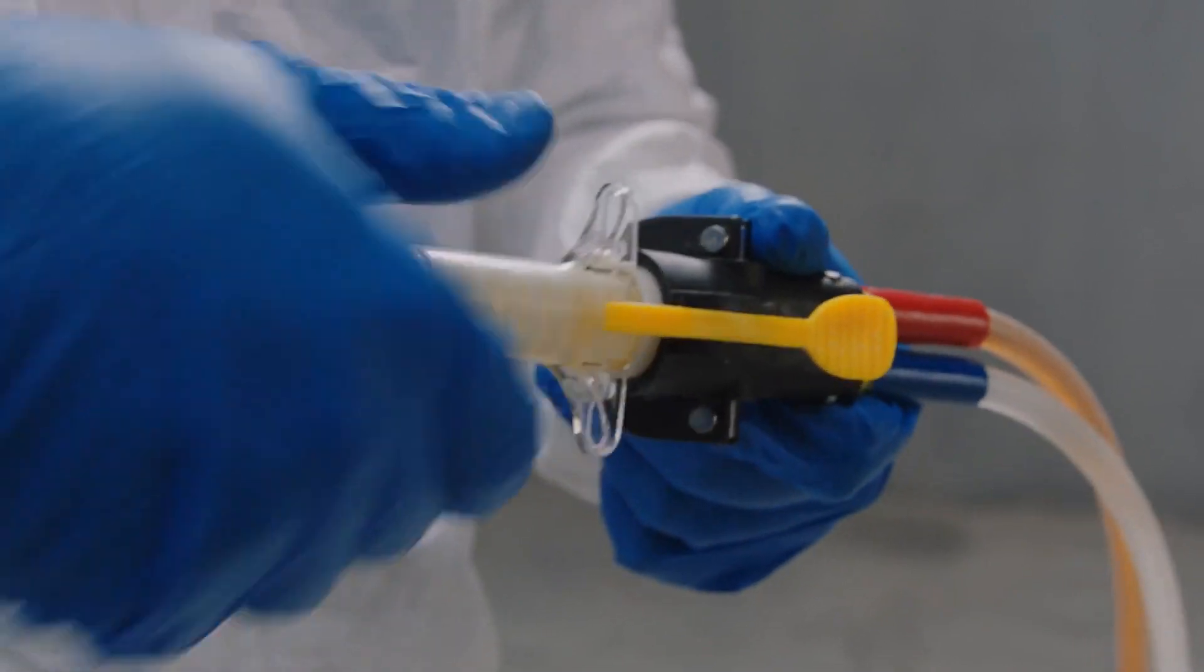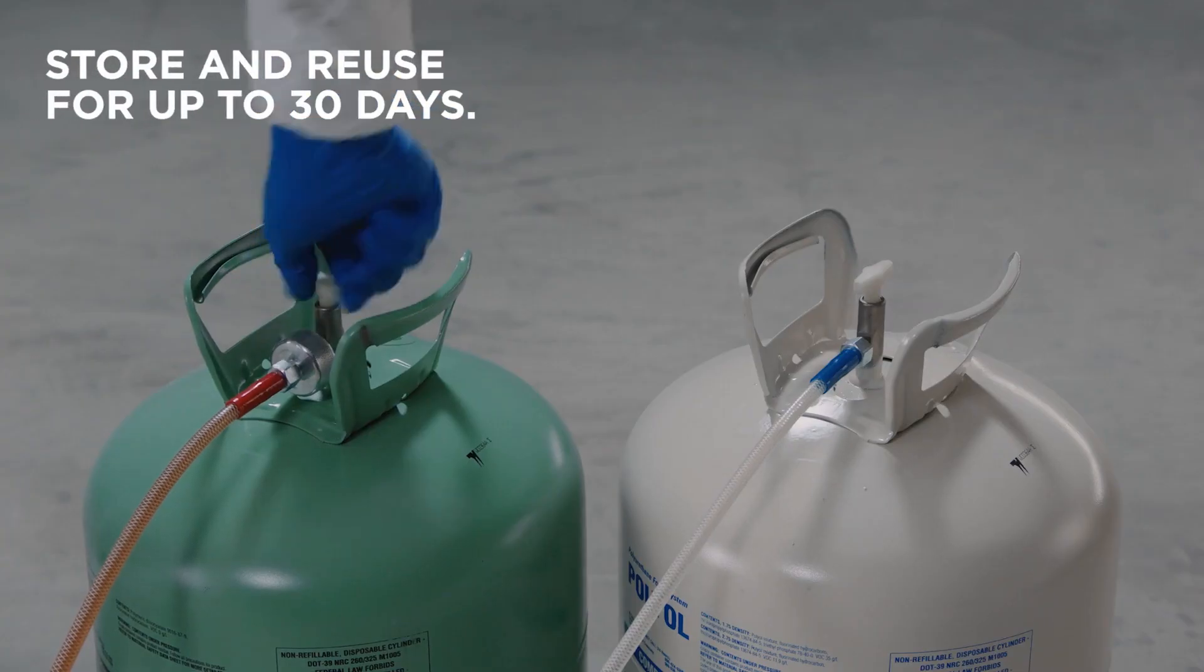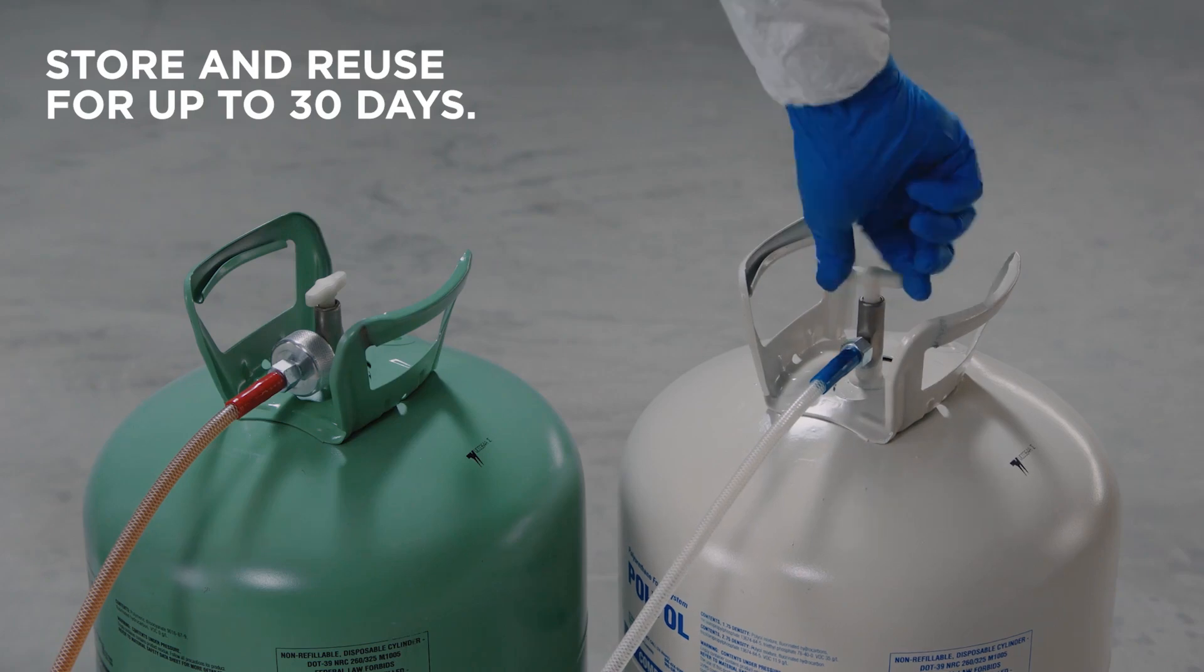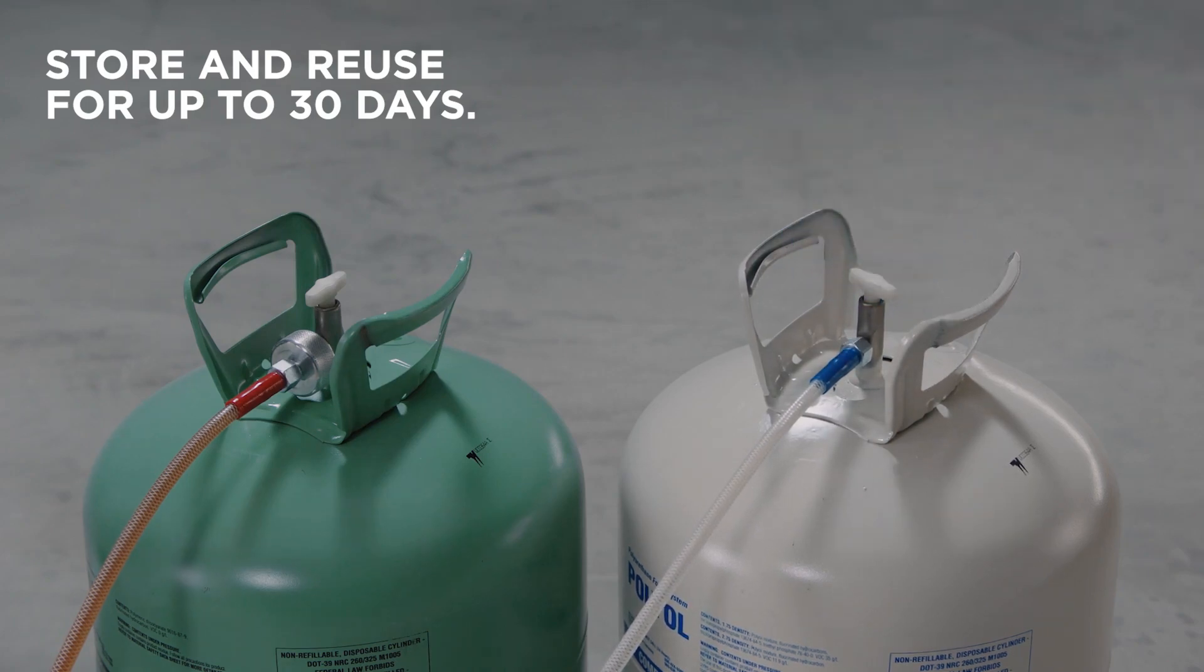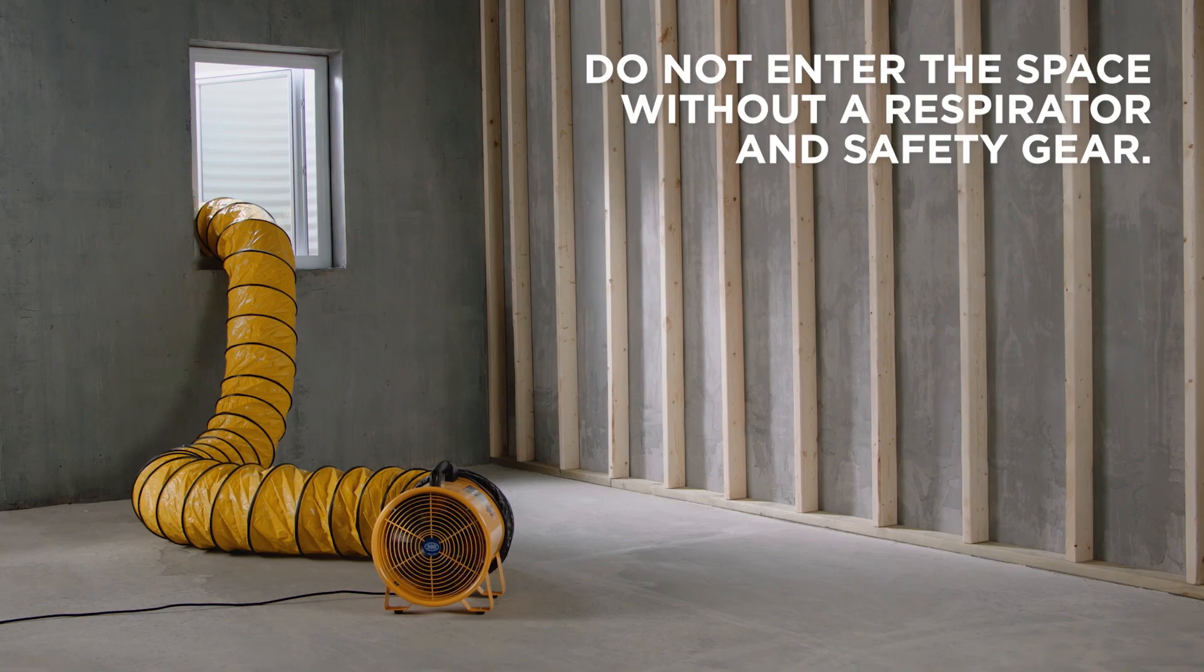Close both cylinder valves and store. You can reuse FrothPak for up to 30 days. Continue ventilating the area for at least another hour.